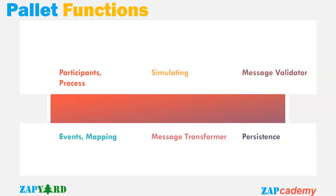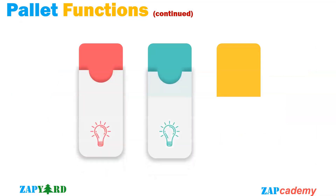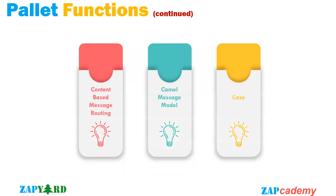Probably this week is going to be one of the most important classes and participants should not miss it. We will continue palette functions in the next week's classes too. We will cover content-based message routing and then explore the Camel message model. After all these concepts and short hands-on exercises, we will do a real business use case scenario using palette functions and full custom interface development, including Groovy scripting with both basic and advanced scripting.